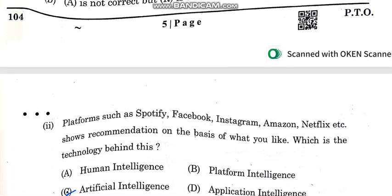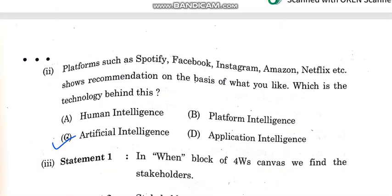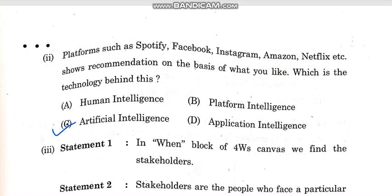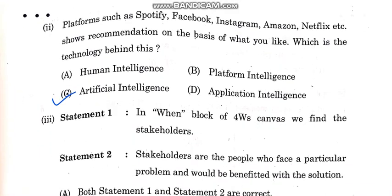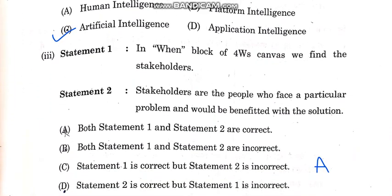The next question is about platforms such as Spotify, Facebook, Instagram, and Amazon — platforms that give us recommendations we like. Which is the technology behind this? The answer is artificial intelligence.